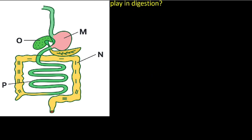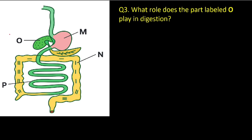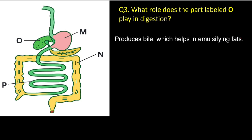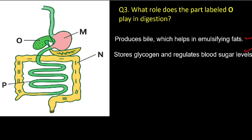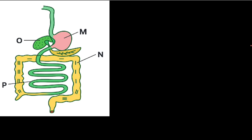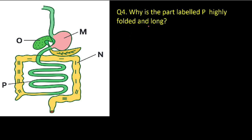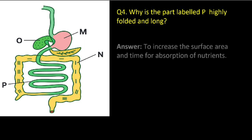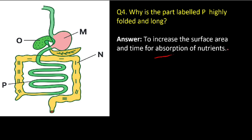Question number three: what role does the part labeled O — the liver — play in digestion? Number one, it produces bile which helps in emulsifying fats. Bile is stored in the gallbladder. Another function is to store glycogen and regulate blood sugar level. Question number four: why is the part labeled P highly folded and long? P is the small intestine — the reason for being coiled is to increase the surface area and time for absorption of nutrients, as most nutrients are digested and absorbed in the small intestine.